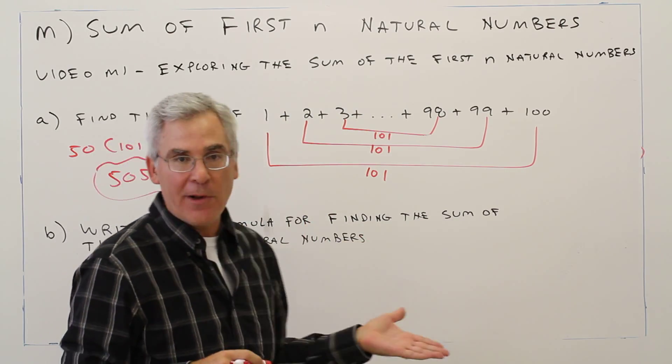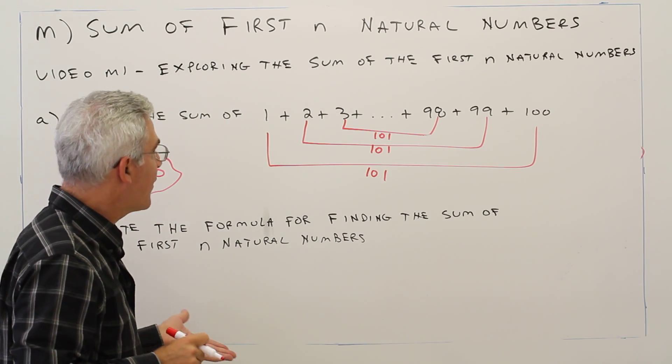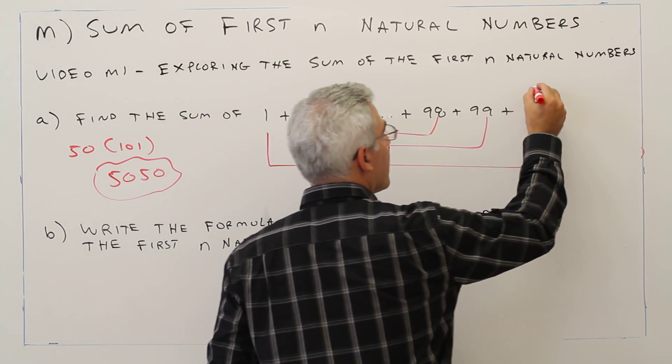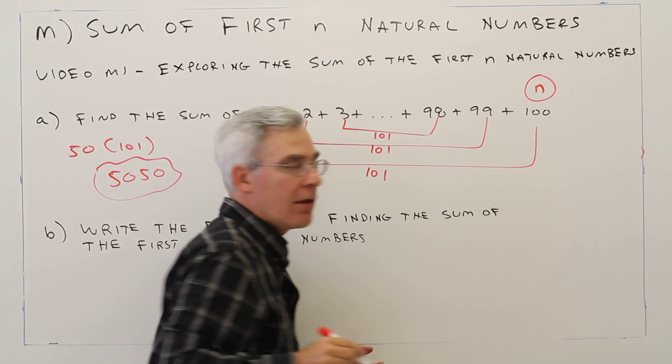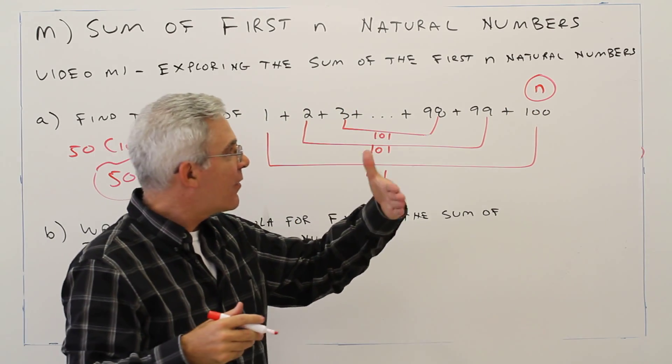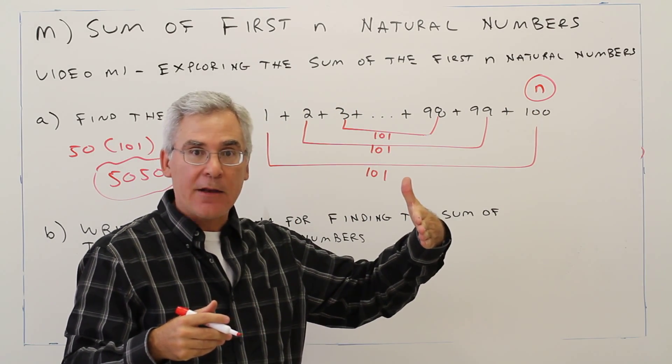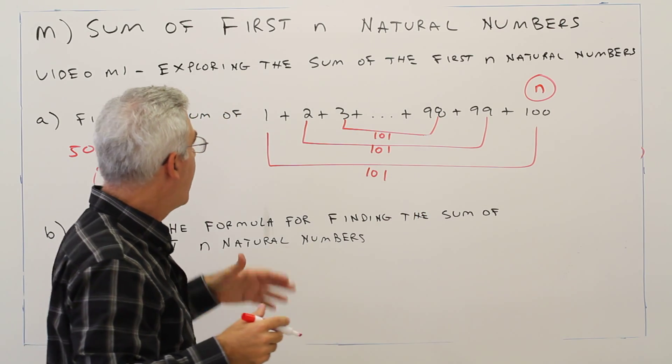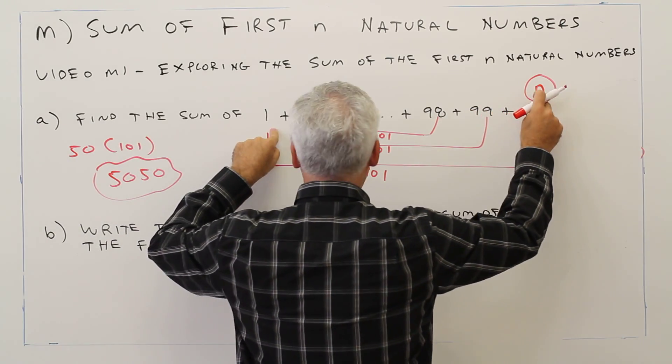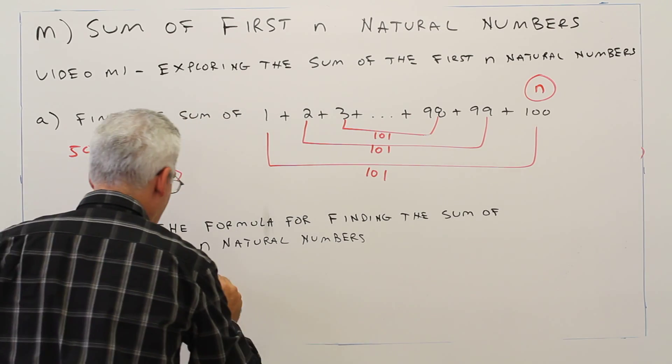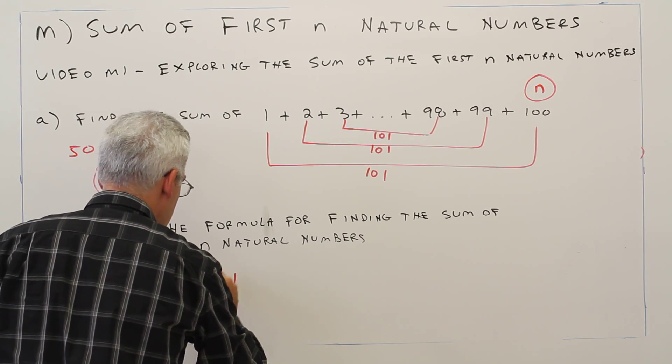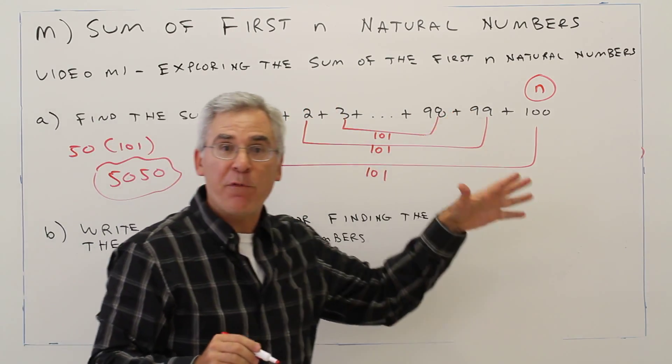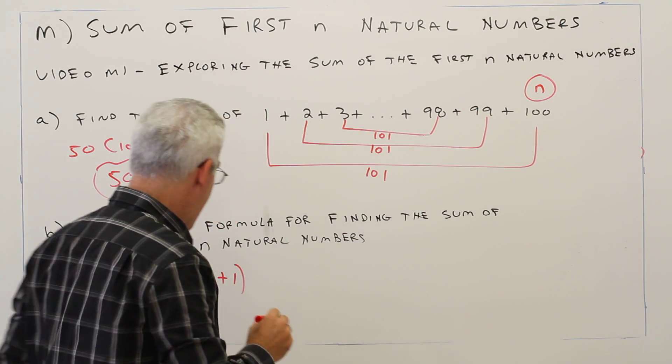All right, so now the formula is going to simply be this. Let's let the last natural number be n. Well, then the sum is going to be n plus 1. The number of pairs is going to be n divided by 2.